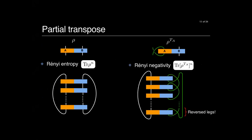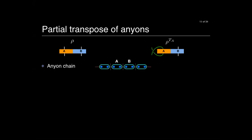For the rest of the talk I'll use a diagrammatic representation. Remember that the density matrix is like an operator — it has two sets of legs. A partial transpose effectively exchanges two legs. When computing the Rényi entropy, you just contract the physical degrees of freedom by contracting each density matrix with the next. For partial transpose, you just change the order of the legs. This will be our guiding principle for defining the partial transpose for anyons.